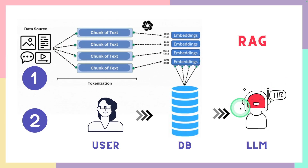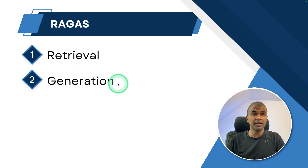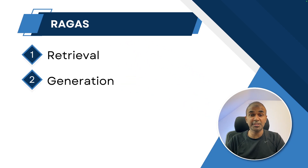So how effective the retrieval system is to retrieve relevant context, and how effective the answer generation is relative to the question asked by the user — we can test two things: retrieval and generation. Retrieval is more related to the embedding model we use, and generation is more related to the large language model. You can test both using RAGAs.